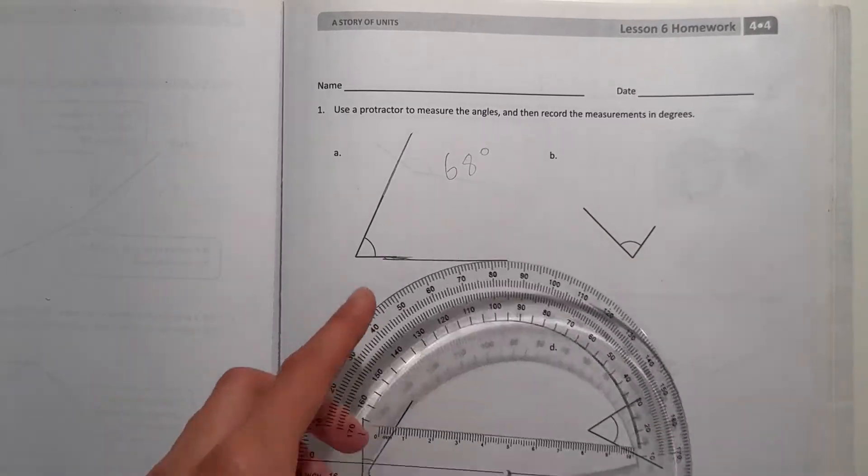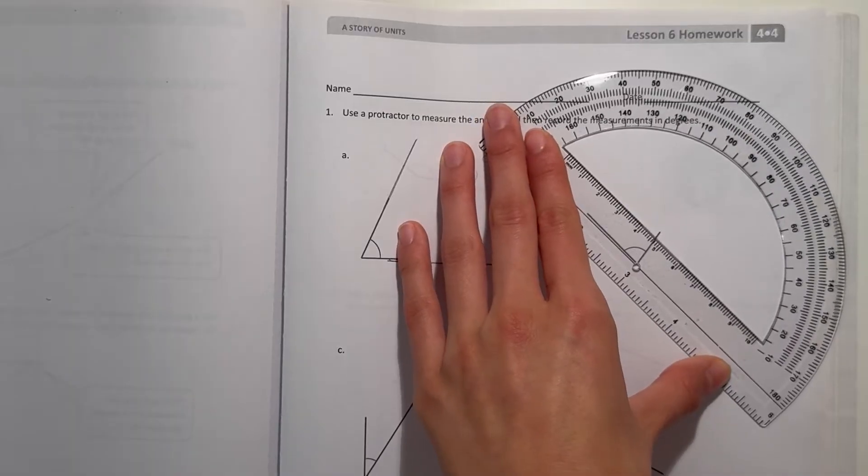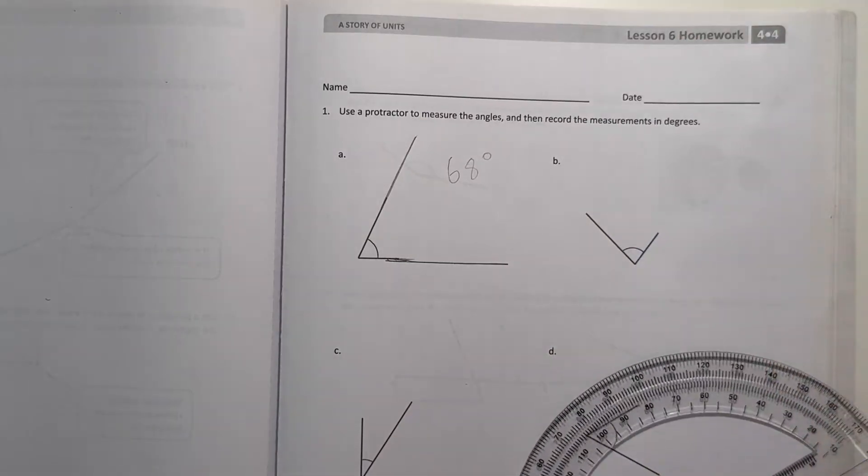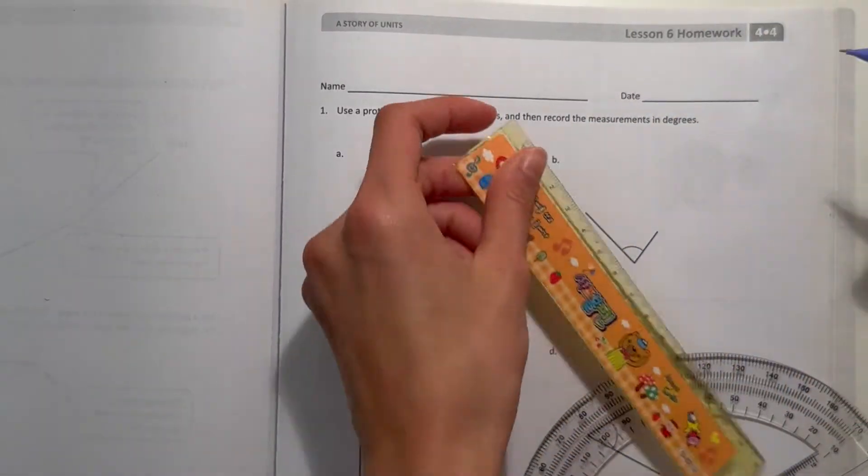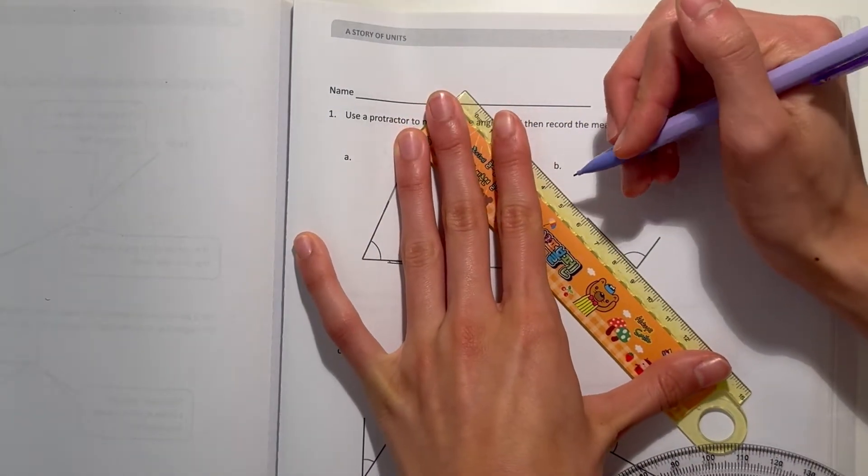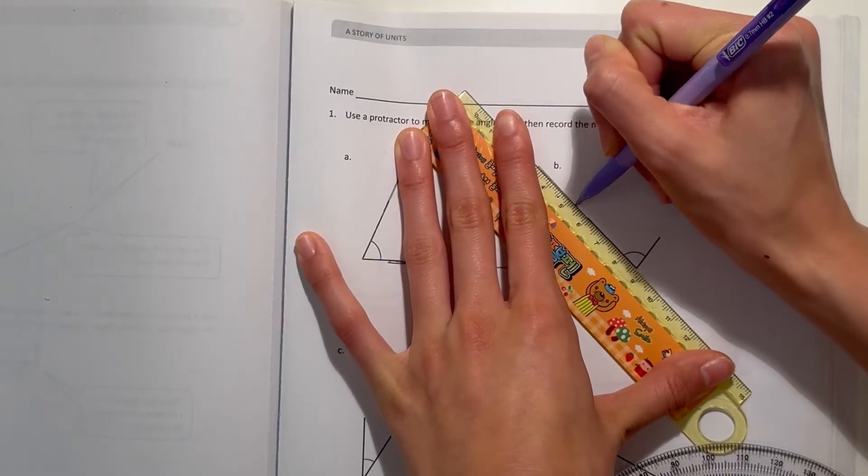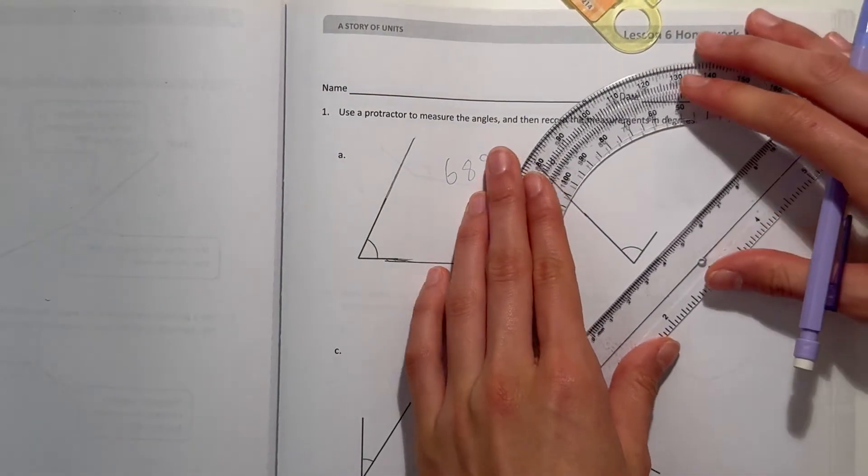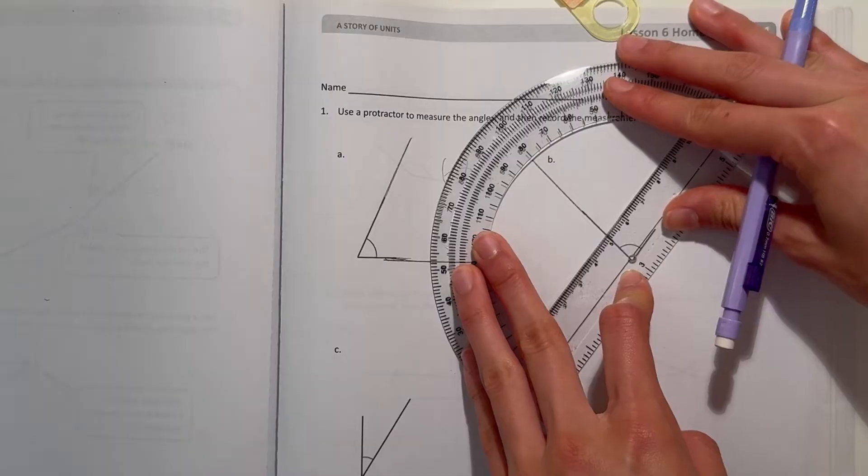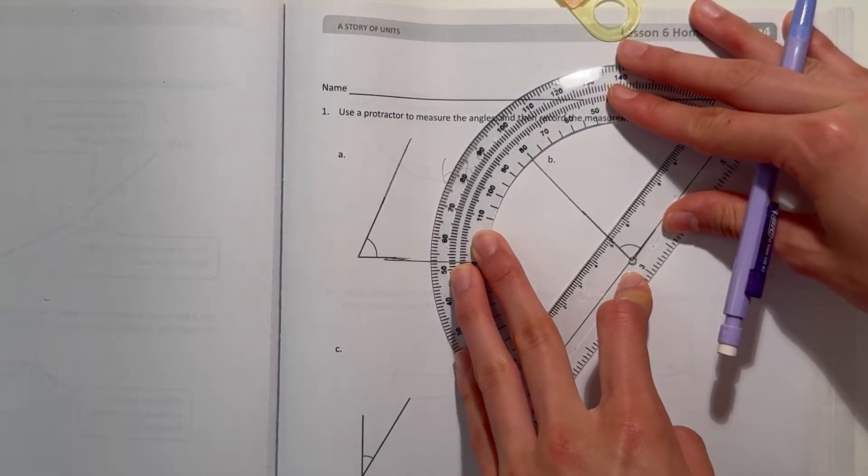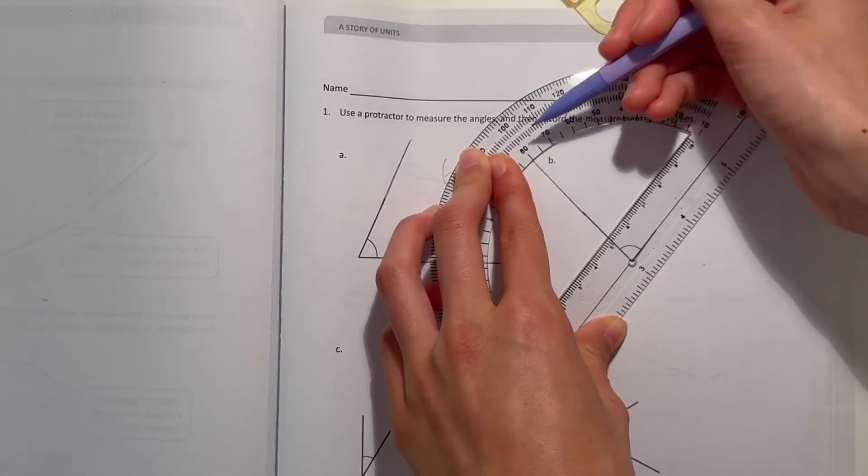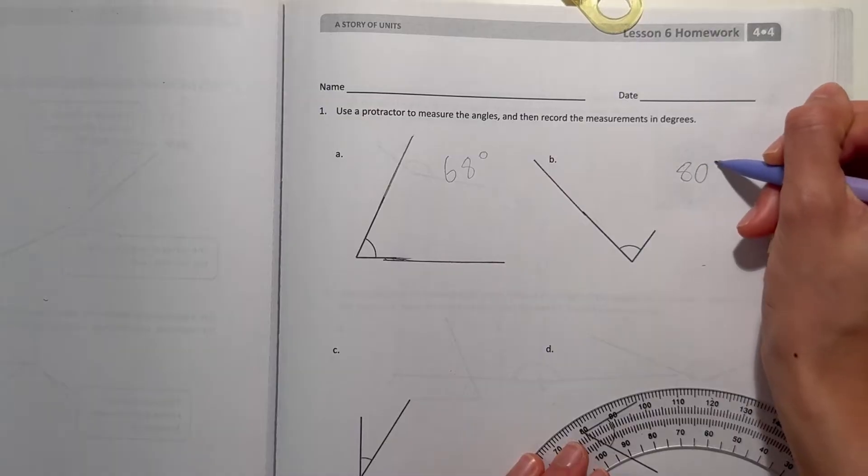Now B. Let's extend the leg of the angle a bit to make it easier. So I'm going to do from this side. Make sure the little circle matches up with the edge and the line matches up with the other line. Match it up real nice. You see how it points right at 80? That means this angle is exactly 80 degrees.